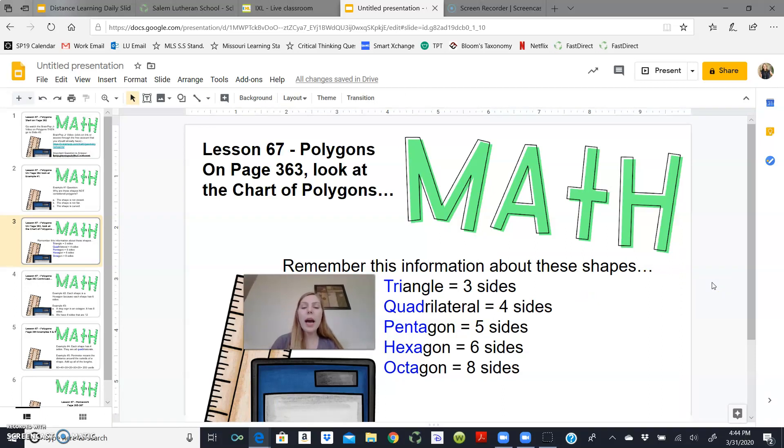So the first shape that we have is a triangle. It has tri highlighted and tri in Greek means three. You know that a triangle is a shape that has three sides. The next shape is a quadrilateral. Quad is highlighted for you. And quad means four in Greek. Quadrilaterals have four sides.